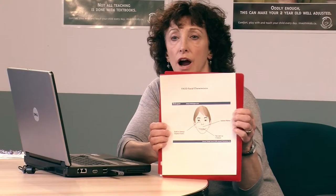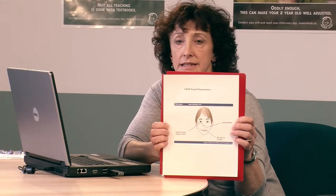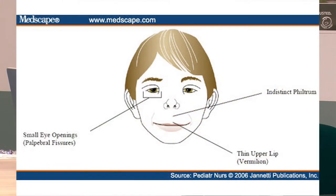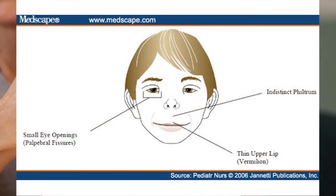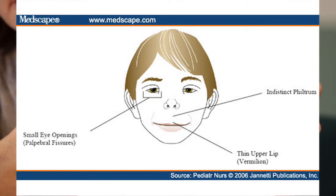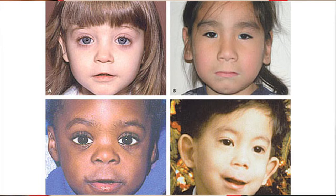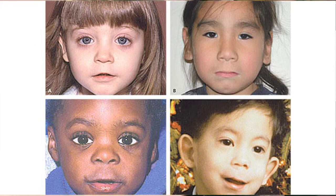Individuals who have physical characteristics of FASD are usually those of the face. This is the common face of FASD. The eyes are smaller because the openings to the eyes tend to be smaller. There is a smoothness on the upper lip—they don't have the normal little indent that most people have—and the actual upper lip is thinner. Those are three of the most common facial features.